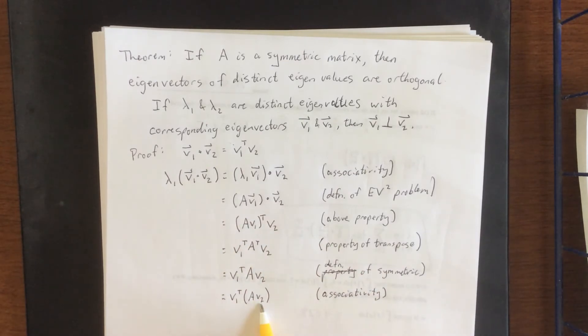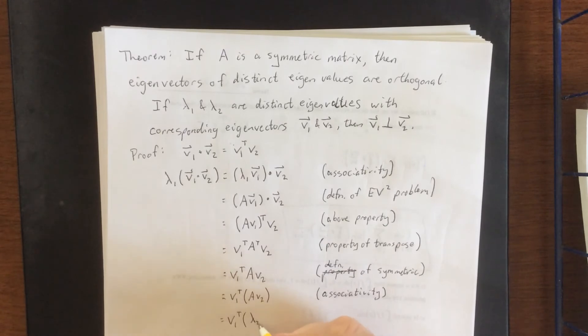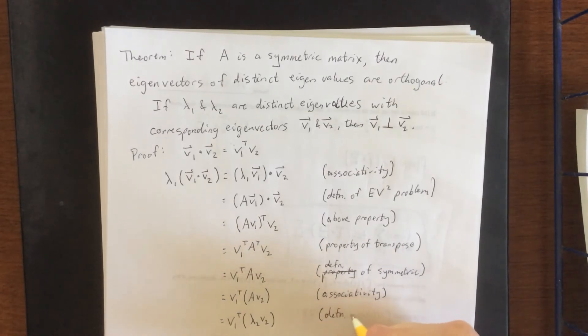Then A times V2. This is a matrix times an eigenvalue, which means that it can be replaced with the corresponding eigenvalue times the eigenvector. I said V2 was an eigenvector, right? Good. So that's again the definition of the eigenvector eigenvalue problem.